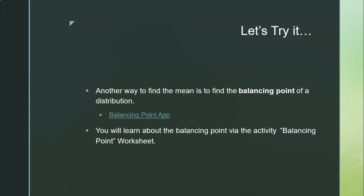We're going to work on the 2.2A activity to see another way of finding the mean. Another way to find the mean is to find the balancing point of a distribution. It's really important that you understand that the mean is a balancing point for our distribution. We're going to do this by going to the balancing point app — the 2.2A balancing point worksheet.